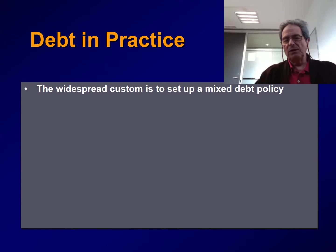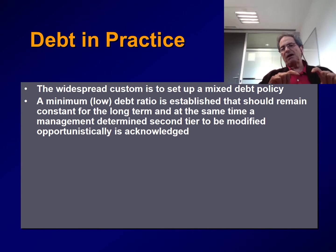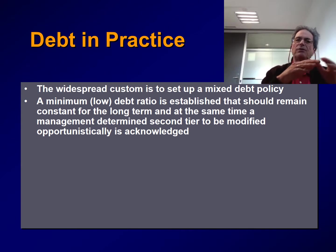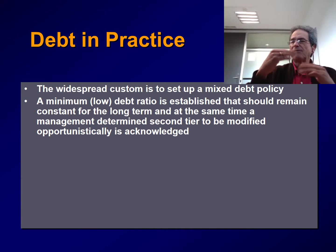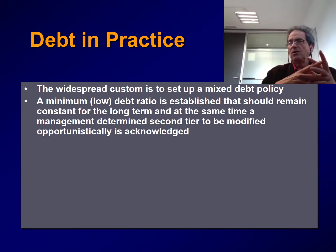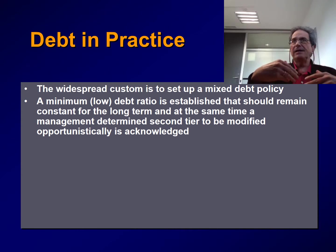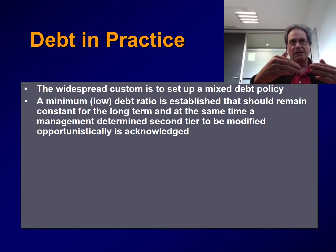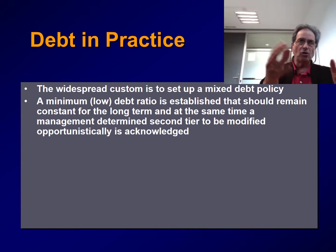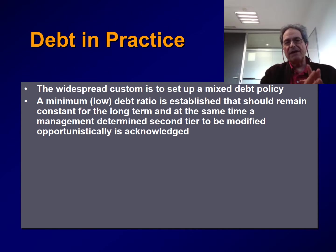How is debt determined in practice? The widespread custom is to set up a mixed debt policy. First, a minimum, relatively low debt ratio is established that should remain constant for the long term. At the same time, there is a second tier that is determined by management over time and is opportunistic in nature. For instance, when a company in an emerging market is expecting devaluation of the currency, it's a good moment to take on a lot of debt to import raw materials. So the level of debt, to a great extent, depends on what happens in the economy and how management plans to take advantage of this.